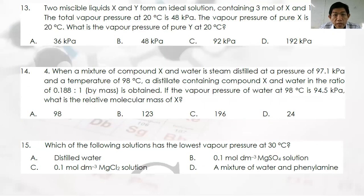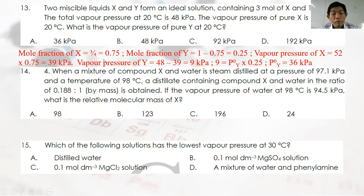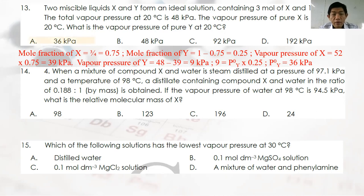Question 13: Two miscible liquids X and Y form an ideal solution with 3 mol X and 1 mol Y. Total vapor pressure at 20°C is 48 kPa and vapor pressure of pure X is 52 kPa. Mole fraction of X = 3/4 = 0.75; mole fraction of Y = 0.25. Partial pressure of X = 52 × 0.75 = 39 kPa. Partial pressure of Y = 48 − 39 = 9 kPa. Pure vapor pressure of Y = 9 / 0.25 = 36 kPa. Answer: A.